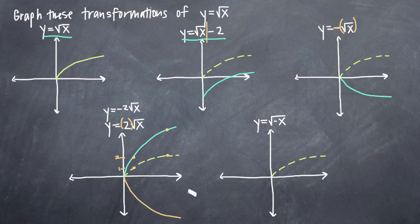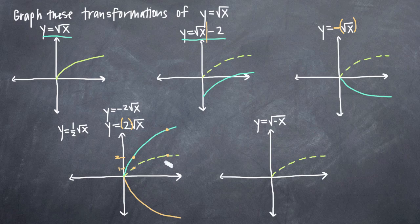Keep in mind that the same thing goes for shrinking the graph. If we had the function y equals one-half times the square root of x, we're dividing our original function by 2 instead of multiplying it by 2. I hope that gives you an idea of the transformations you'll see when you have a constant coefficient multiplied by your original function.